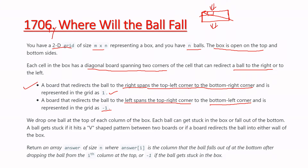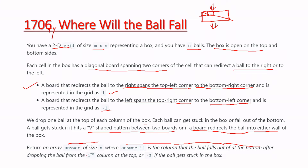We drop one ball at the top of each column of the box. Each ball can get stuck in the box or fall out of the bottom. A ball gets stuck if it hits a V-shape pattern between two boards, or if the board redirects the ball into a wall. We return an array of size n where answer[i] is the column where the ball falls out at the bottom, or minus 1 if it gets stuck.